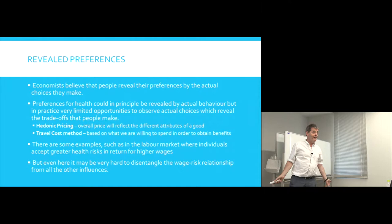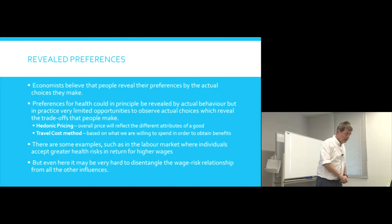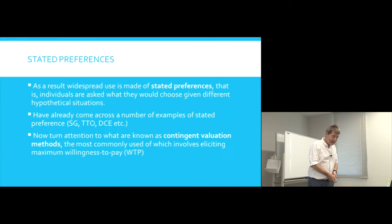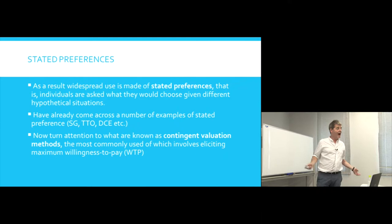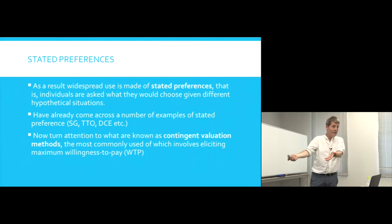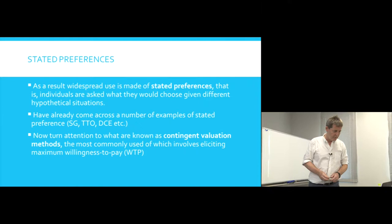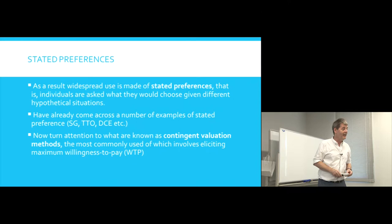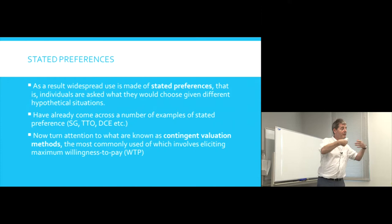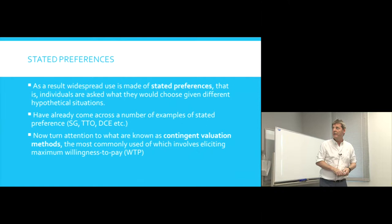Revealed preferences is not going to give us this value — there's just too much going on affecting people's behaviour to reasonably isolate willingness to pay for a health benefit. So we get driven towards stated preferences, where you ask people what value they place on an outcome. Immediately there are many potential sources of bias. We've looked at some stated preference approaches already today — time trade-off is a stated preference approach, giving people a hypothetical choice: remain in a particular health state for 10 years, or move to a better health state but for a shorter time.